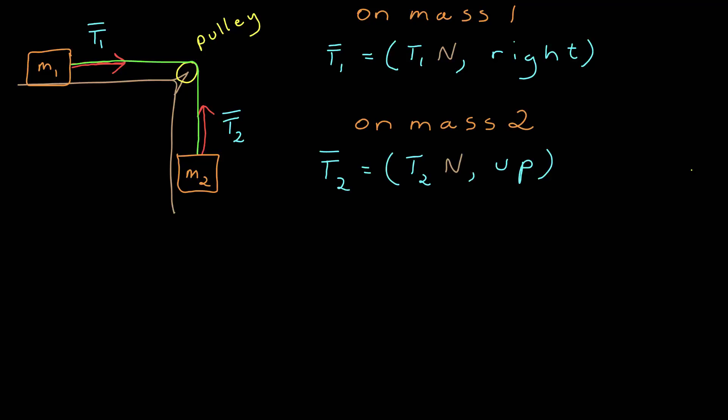If I look at mass 2, the tension would be up, with a magnitude T2, units of newtons again, because it's pulling away from the mass. So I'm looking at two separate objects here. Mass 1, the tension is away from the mass, and if I look at a different object, here the tension is up.